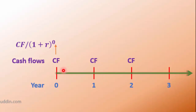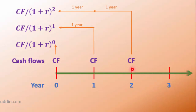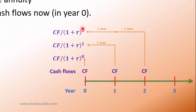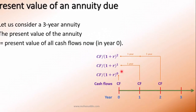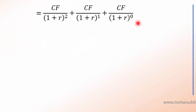The second cash flow is one year away from now, so we have to discount it for one year. The present value of the second cash flow will be CF over (1 + r) to the power one. The third cash flow, although it is third, is in year two, so it will be discounted for two years, giving CF over (1 + r) to the power two. The total present value of this annuity due is the sum of these three present values, which in equation form is: CF/(1+r)² + CF/(1+r)¹ + CF/(1+r)⁰.